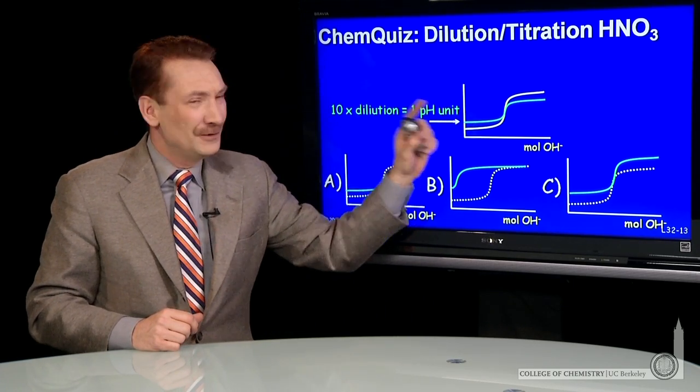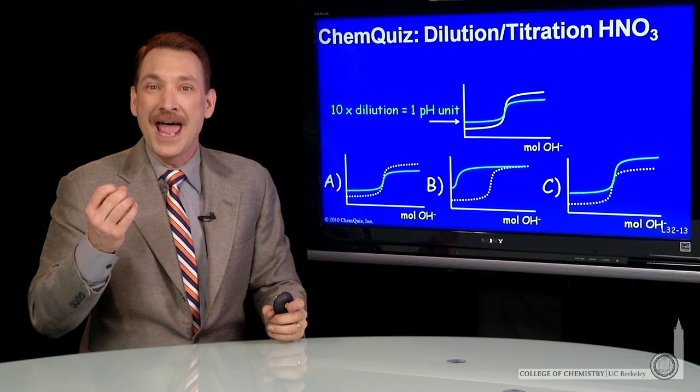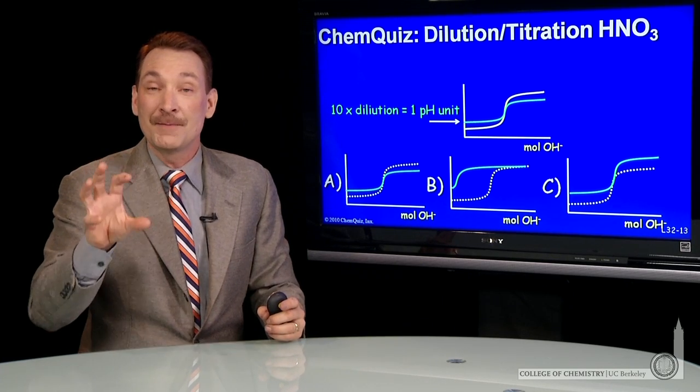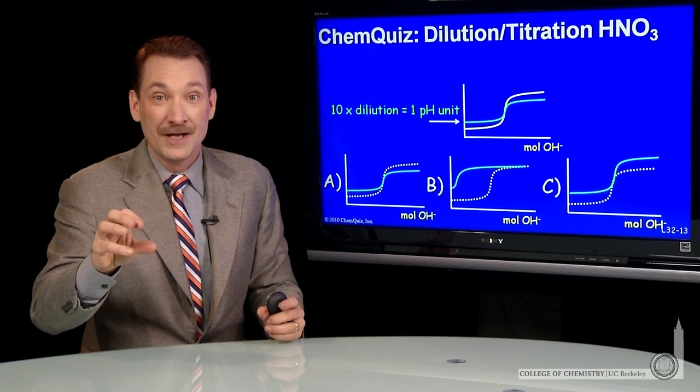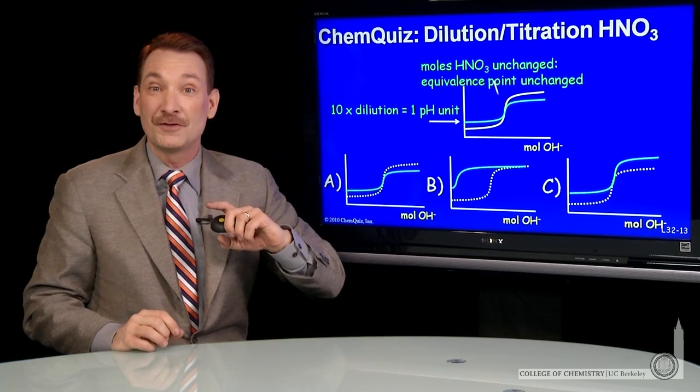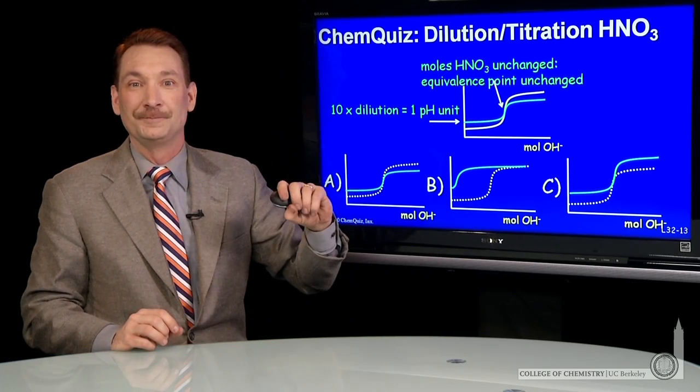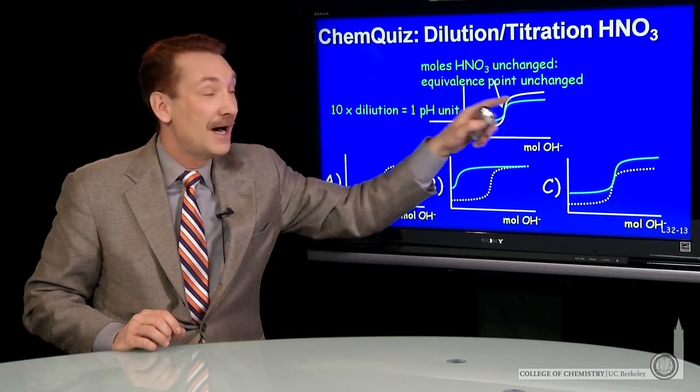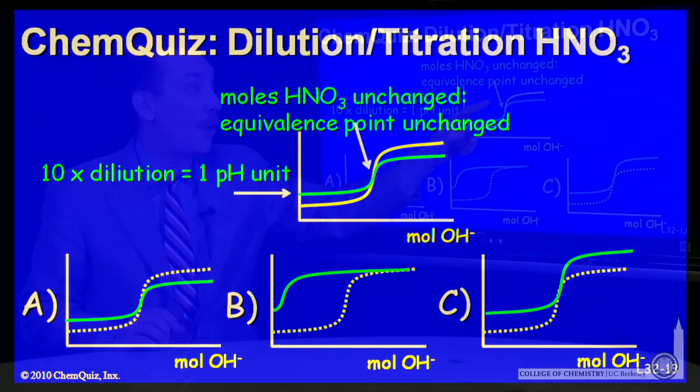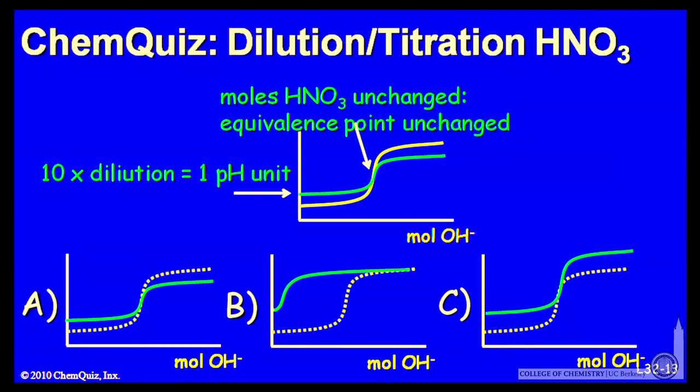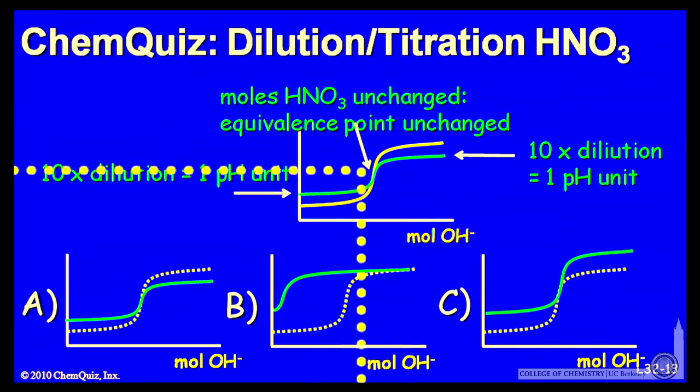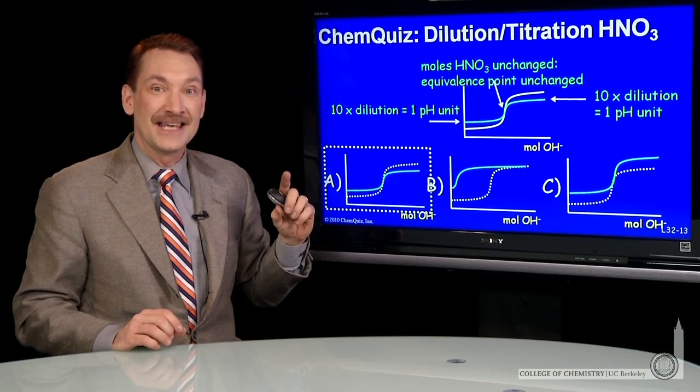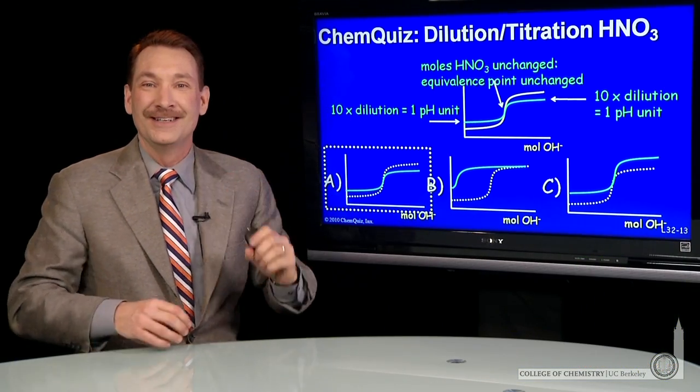But in dilution, you're just adding water. You're not adding any more moles of acid. So the same number of moles of acid are there, so it requires the same number of moles of base to reach equivalence point. And at the end of the titration, again, you'll be off by a factor of 10 or one pH unit. So the correct answer here is A: changes at the beginning and the end, but the equivalence point is the same.